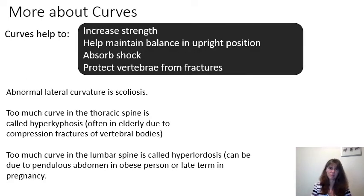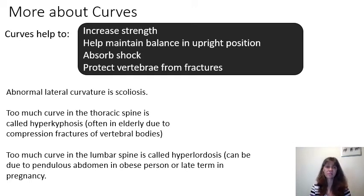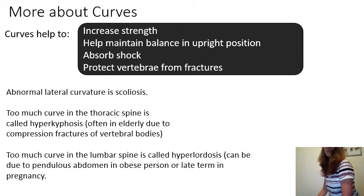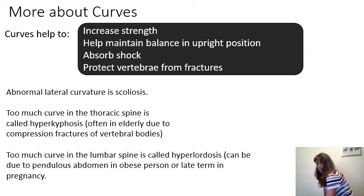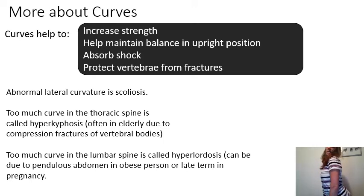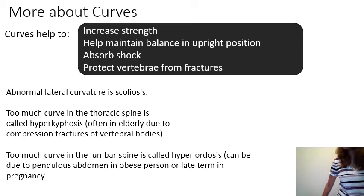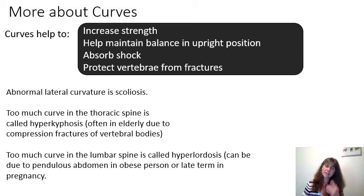The curves in our vertebral column help increase our strength and help us maintain balance when standing upright. They also help to absorb shock and protect the vertebrae from fracturing. An abnormal lateral curvature is known as scoliosis. Too much curvature in the thoracic spine is called hyperkyphosis, seen in elderly individuals. Too much curvature in the lumbar spine is referred to as hyperlordosis, often seen with a pendulous abdomen in someone who is obese or in later pregnancy.